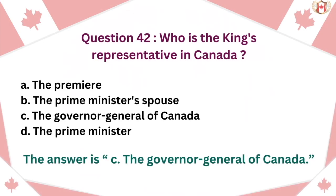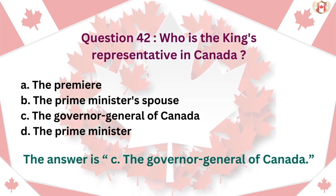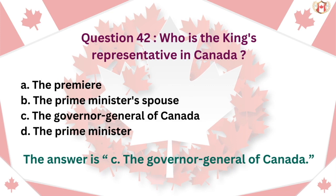Question 42: Who is the King's representative in Canada? A. The Premier, B. The Prime Minister's spouse, C. The Governor-General of Canada, D. The Prime Minister. The answer is C. The Governor-General of Canada.